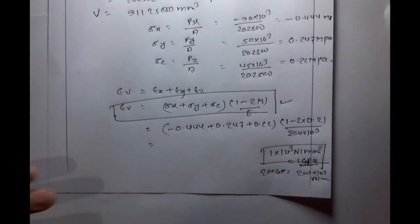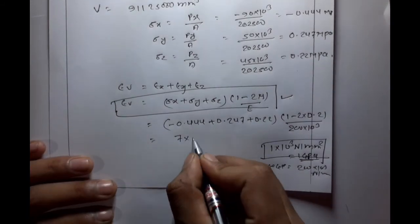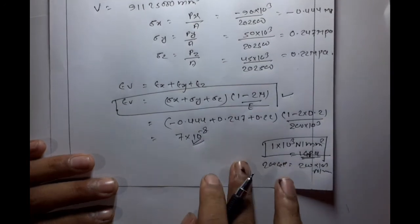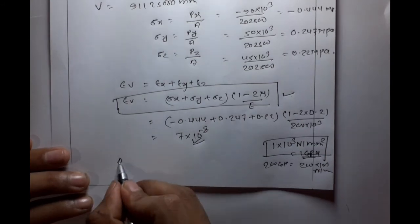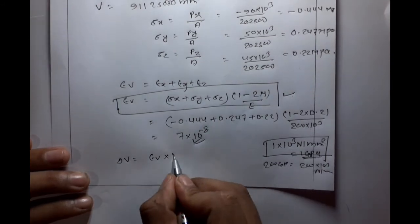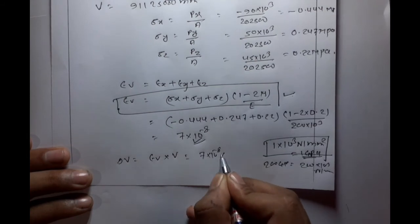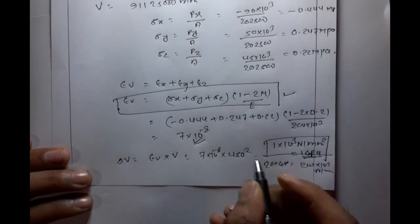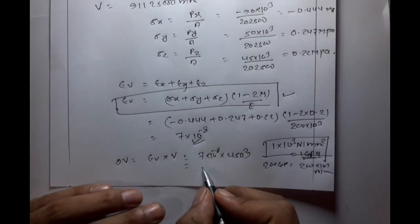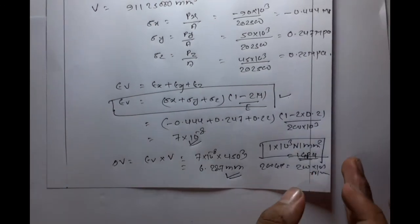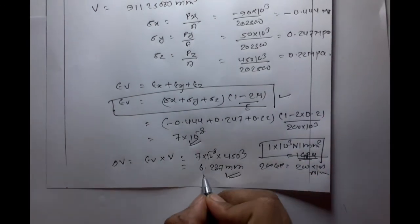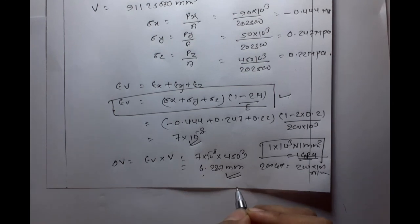After solving, the volumetric strain value comes to approximately minus 8 x 10^-8. Now for the change in dimension: delta L = epsilon x length = 7 x 10^-8 x 450. The answer for change in dimension is 6.287 mm. The change in volume answer is also computed and the required answers are obtained.